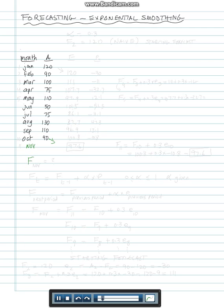What is the forecast for November in exponential smoothing? With exponential smoothing it's very different. The formula is Ft equals Ft minus 1 plus alpha multiplied by the error from the previous period. Alpha is a number strictly between 0 and 1.